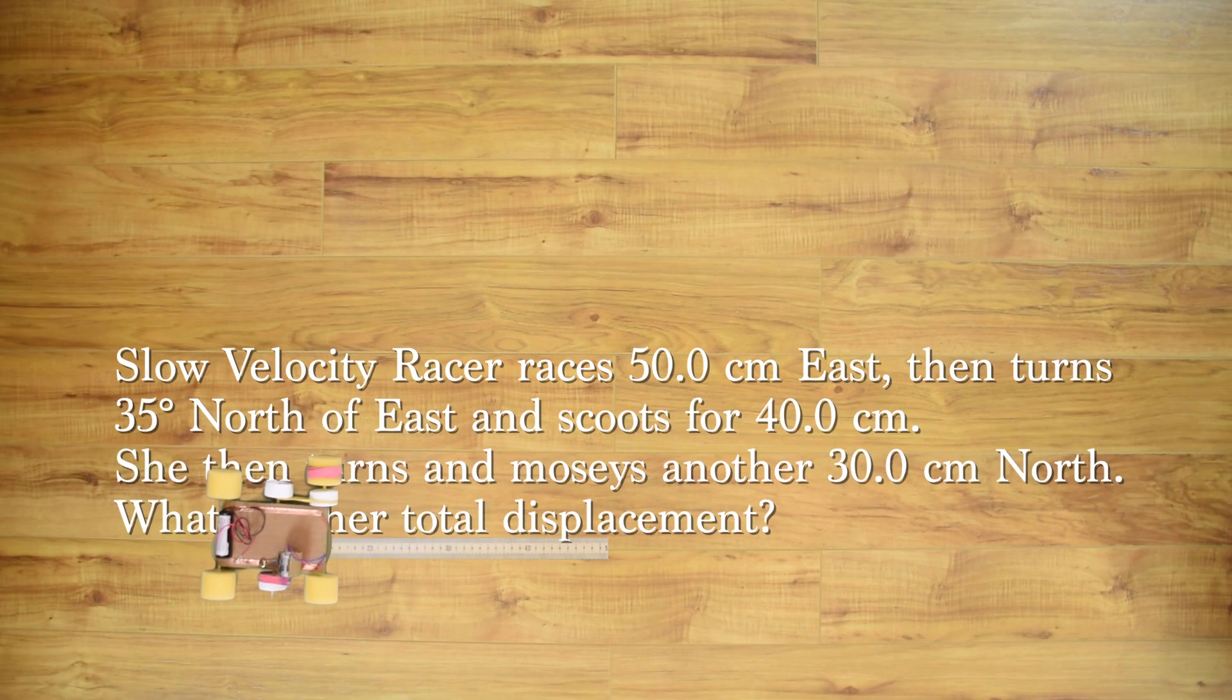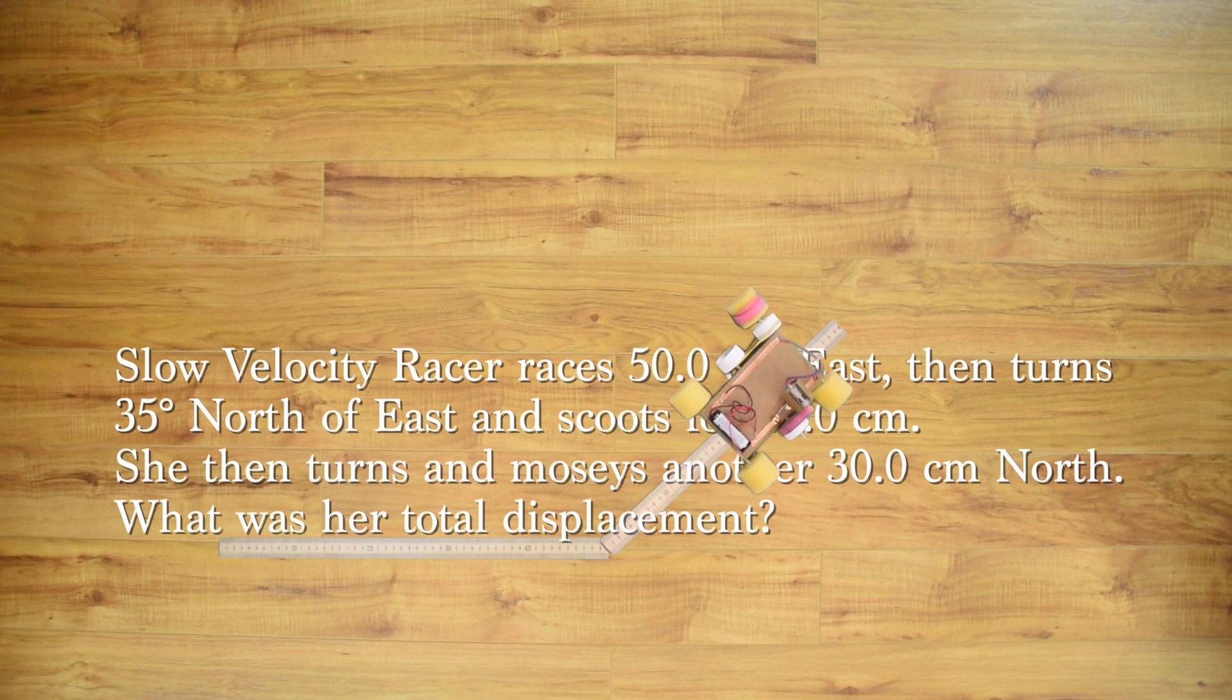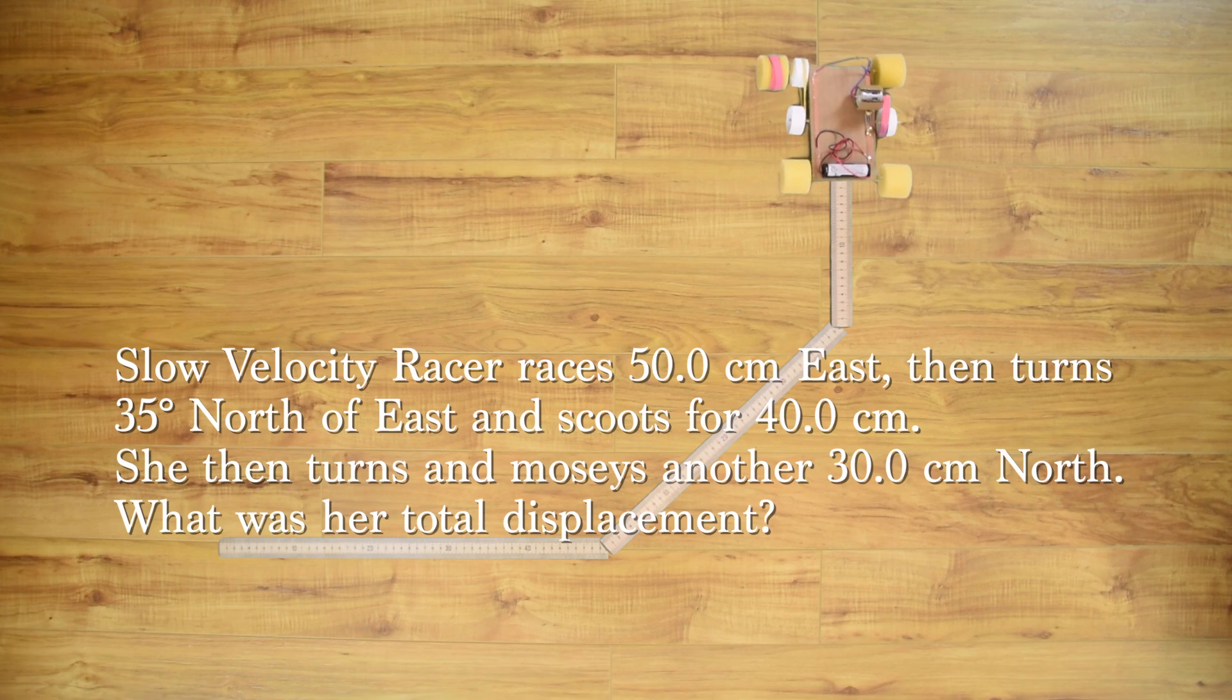Slow Velocity Racer races 50.0 centimeters east, then turns 35 degrees north of east and scoots for 40.0 centimeters. She then turns and moseys another 30.0 centimeters north. What was her total displacement?